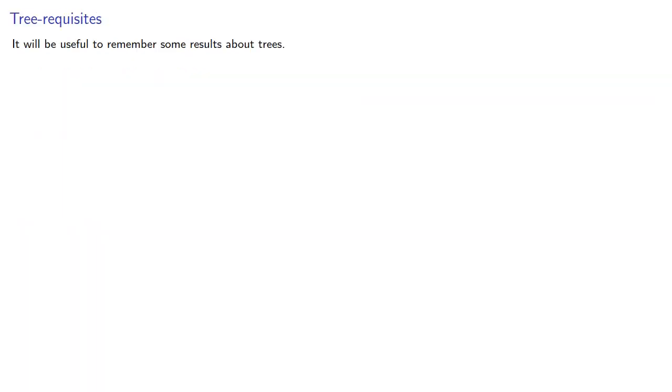It will be useful to remember some results about trees. If a tree has n vertices, it has n-1 edges, and it has at least one vertex of degree 1, which we call a leaf or sometimes a pendant vertex.